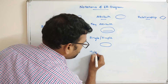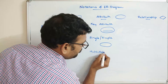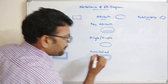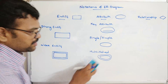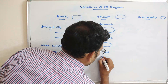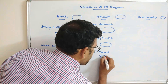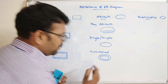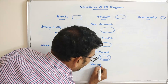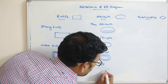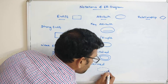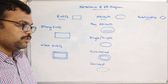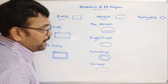A multi-value attribute is represented as a double ellipse. A derived attribute is represented as a dotted ellipse.